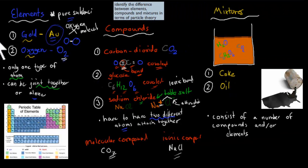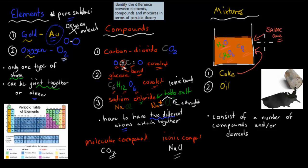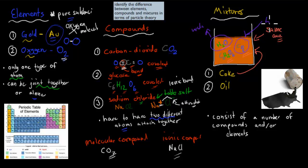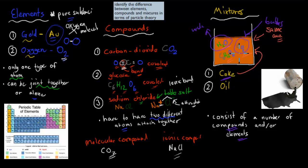In mixtures, we have not just one kind of compound or element. For example, if this were CO2, you can see there are water molecules, glucose molecules, and carbon dioxide molecules all in the same area. A mixture is any area where there's more than one different type of compound or element. So if we take Coke — 90% of Coke is H2O, water — but there's also some glucose and some carbon dioxide. The bubbles come from the carbon dioxide, and the sweetness comes from the glucose. Coke is a good example of a mixture.